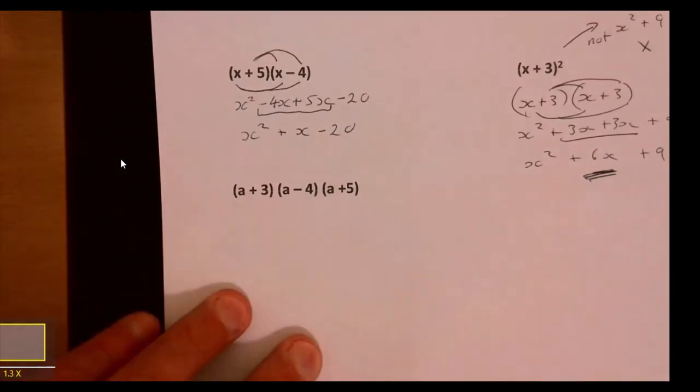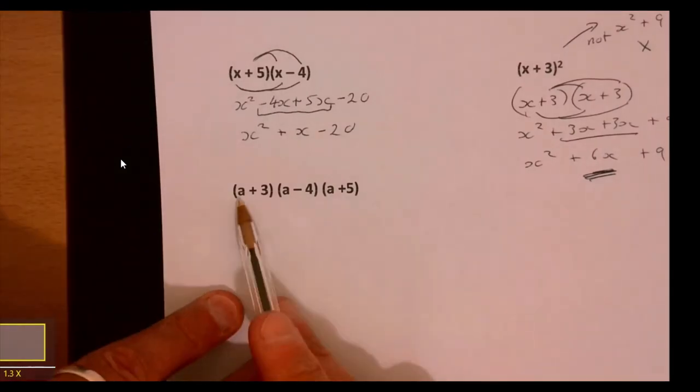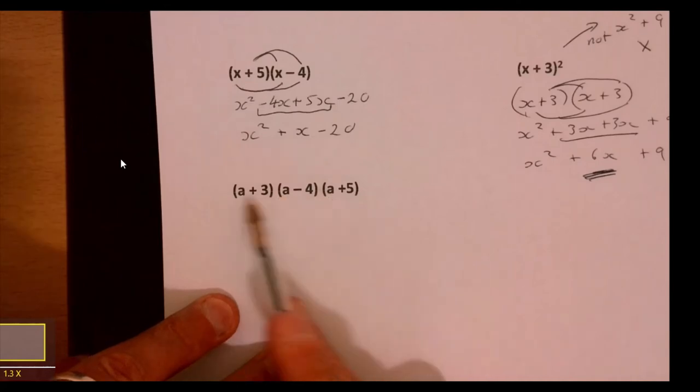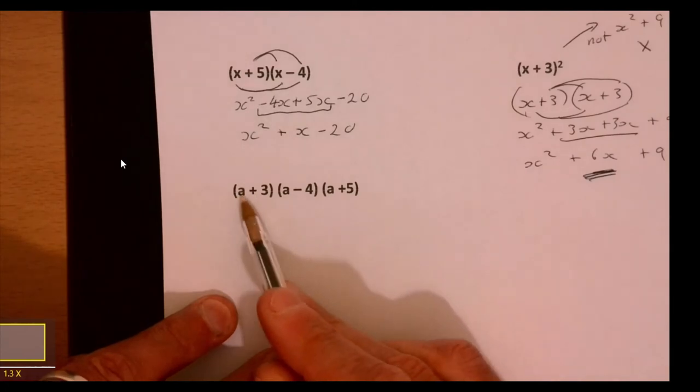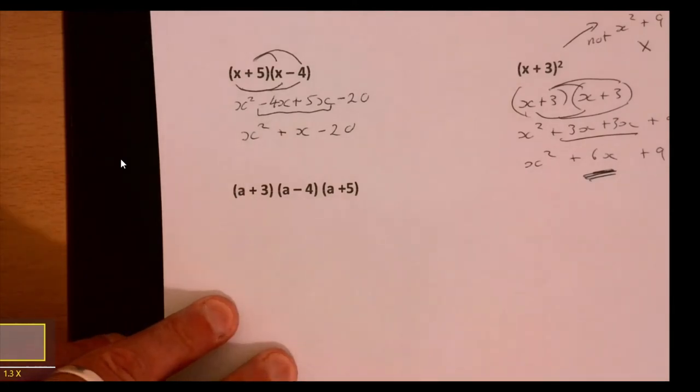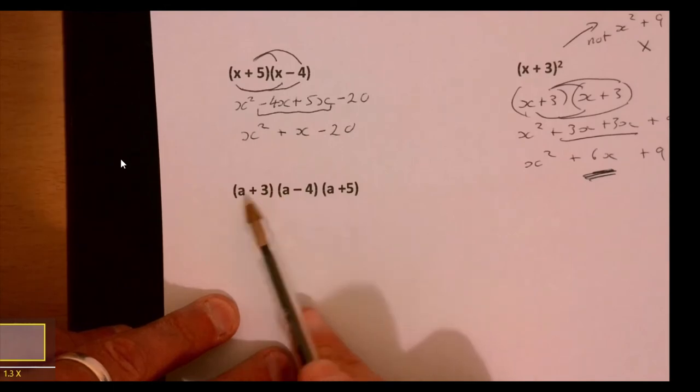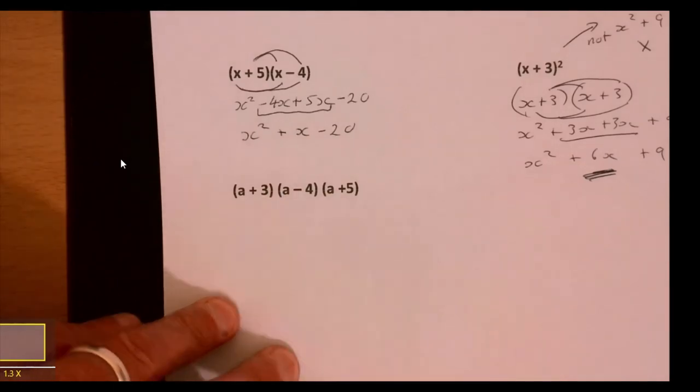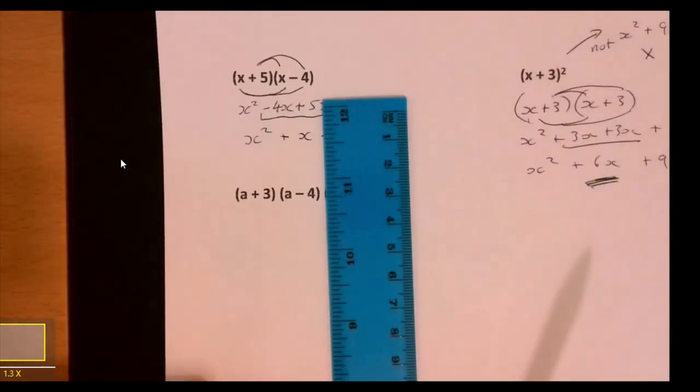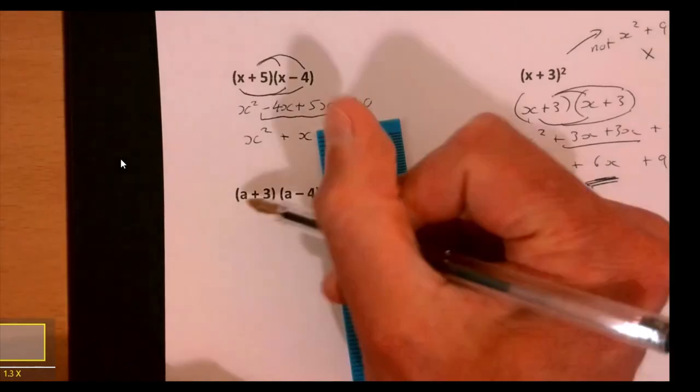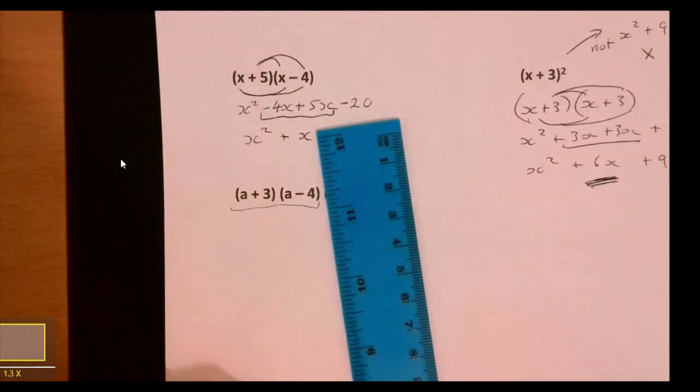One more. What's different about this? Different letters - that doesn't actually make any difference. The more tricky thing is it's got three brackets. The easiest thing to do is forget about the last bracket for a second. Let's do this bit first.